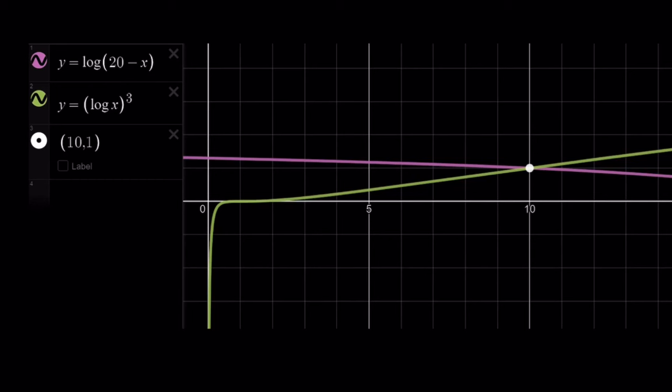And the other function, log³x, the green one, is increasing. And they happen to intersect at (10, 1).